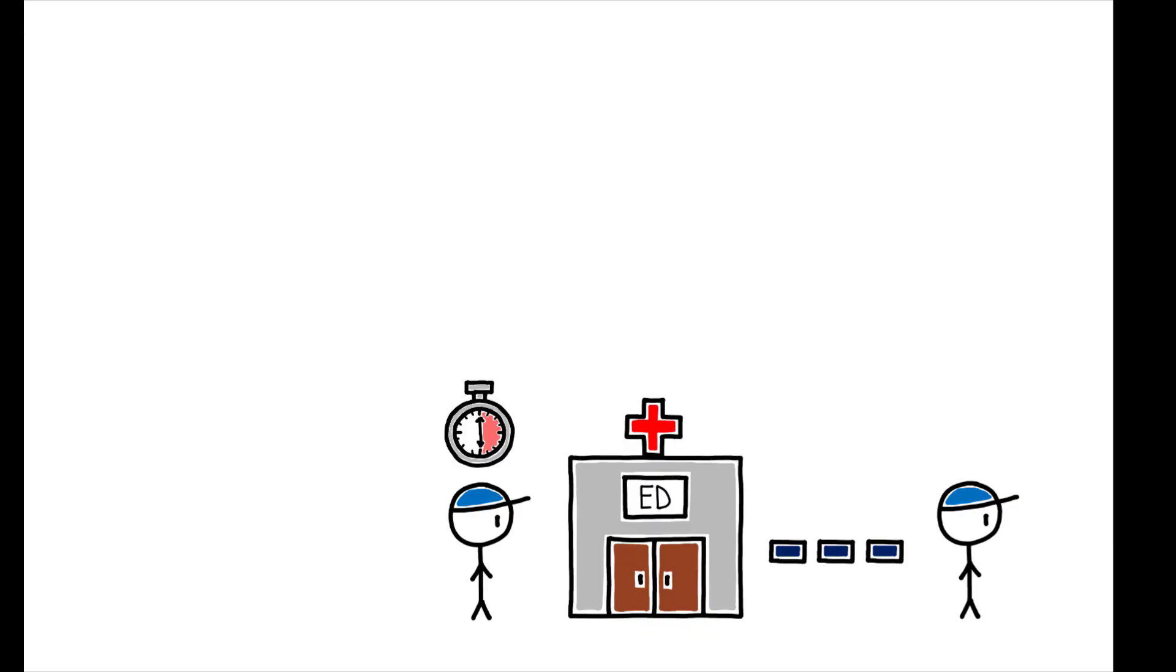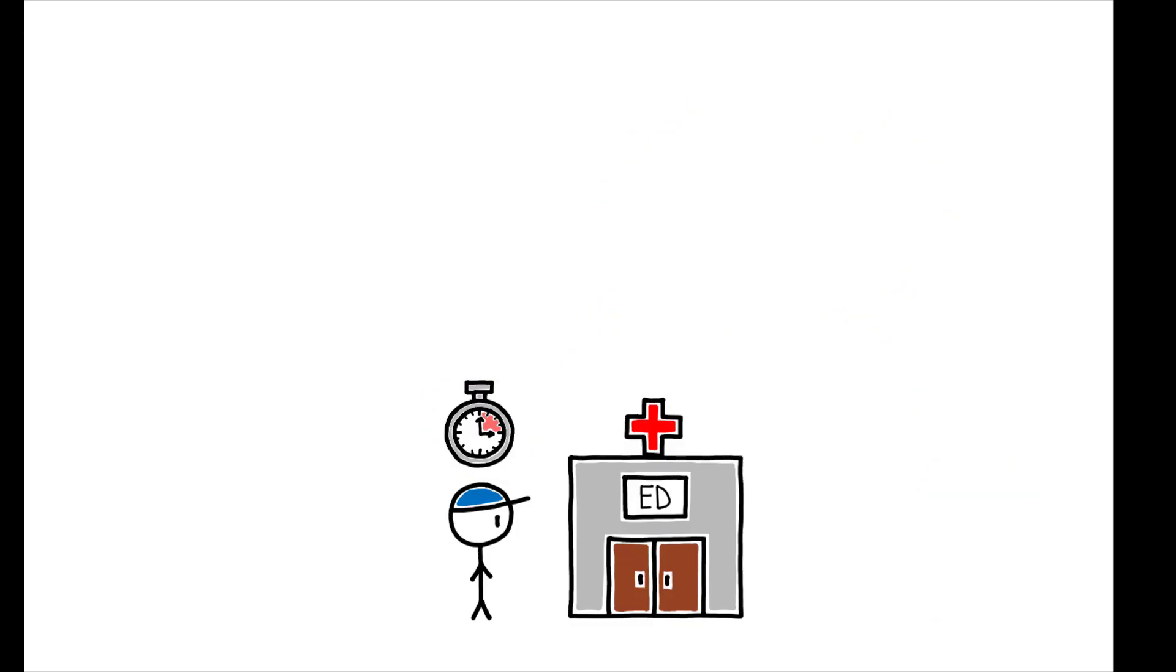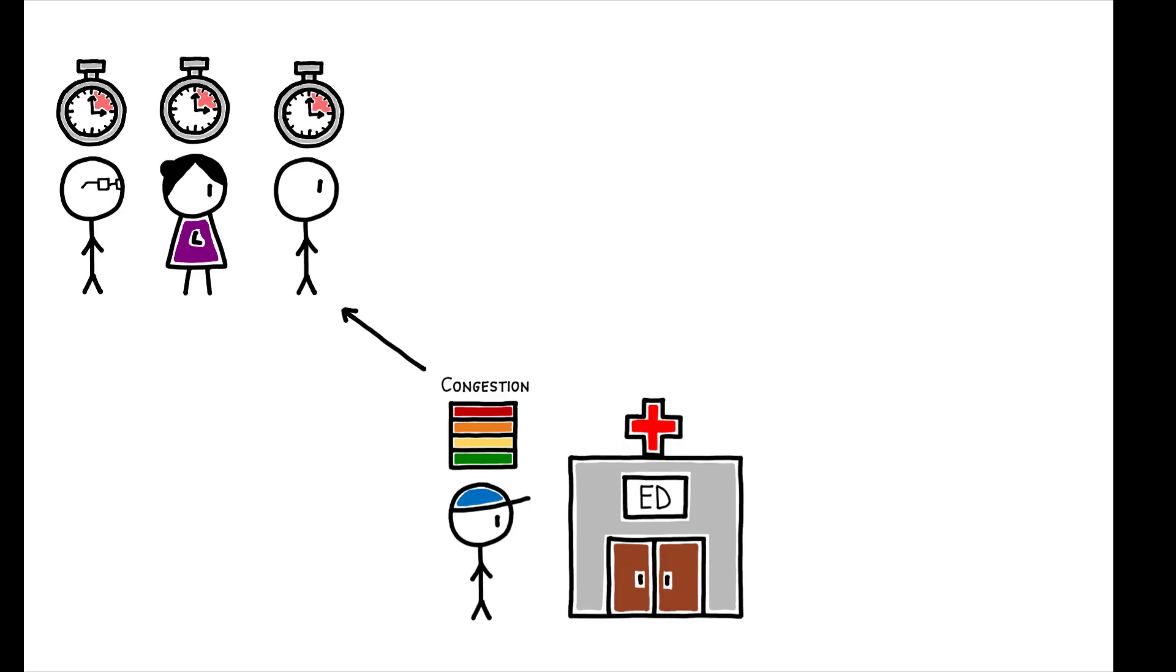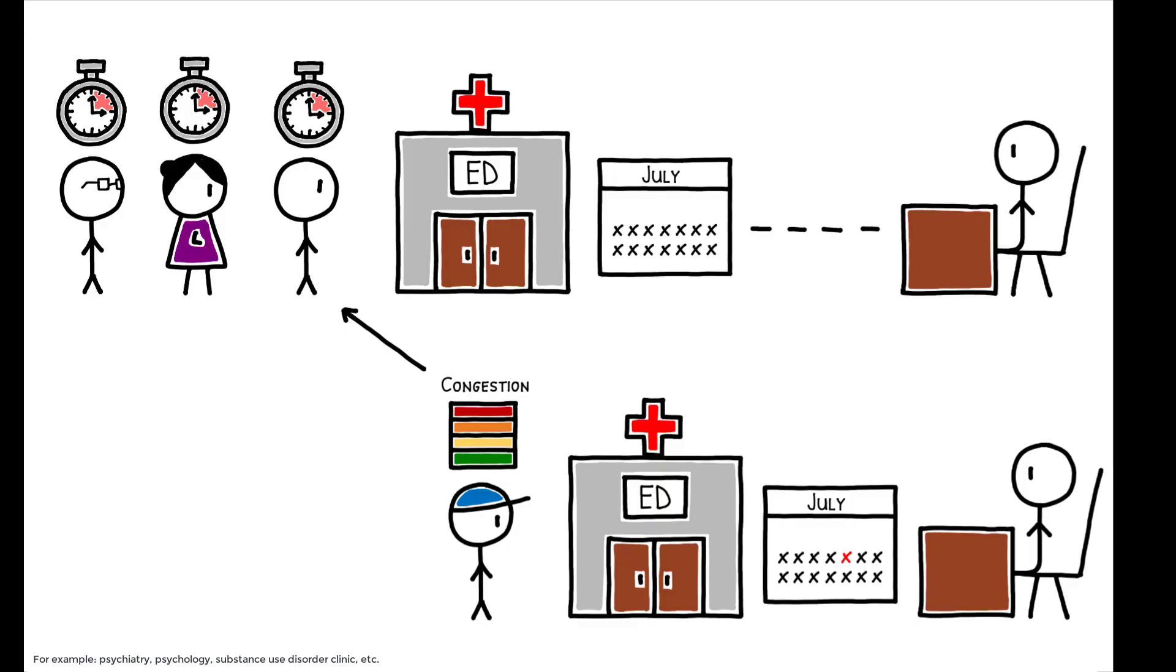A problem is that individual wait times may be related to factors that also affect future outcomes. For example, patients who are deemed high-risk may be fast-tracked and have systematically shorter wait times. To address this, instead of using a patient's own wait time, the author constructs, for each individual, a measure of clinic congestion that is unrelated to that patient's own characteristics. This is the mean wait time experienced by all other patients who arrived at the same hospital during the same two-week period and are assigned the same type of follow-up appointment.